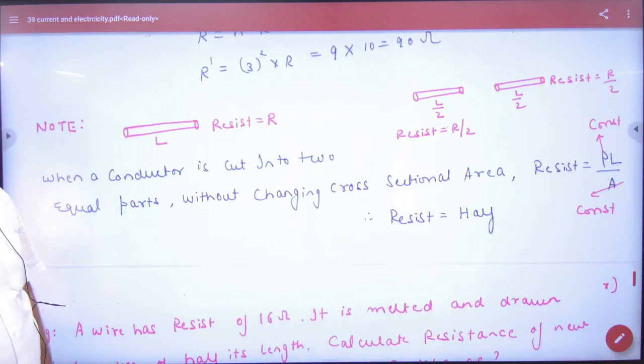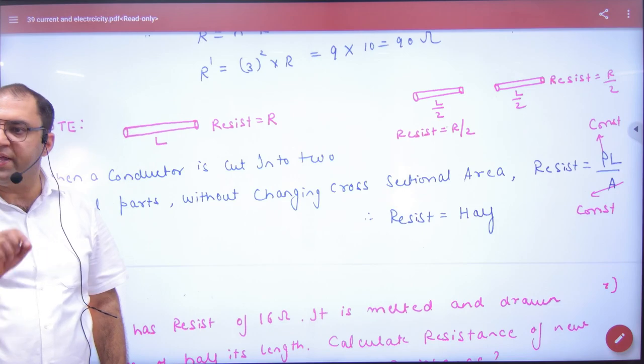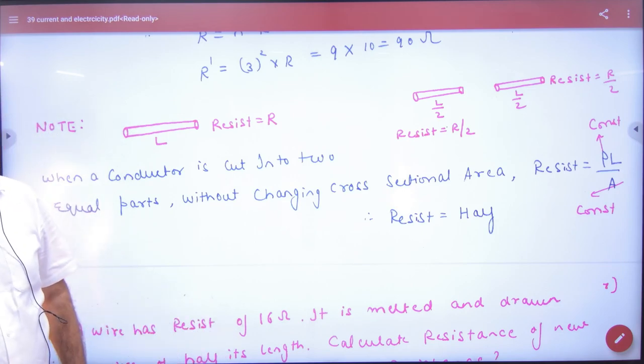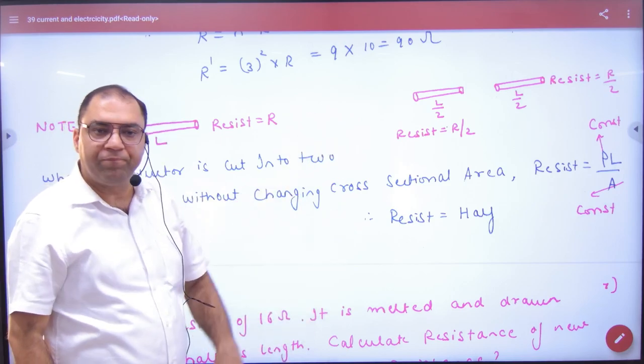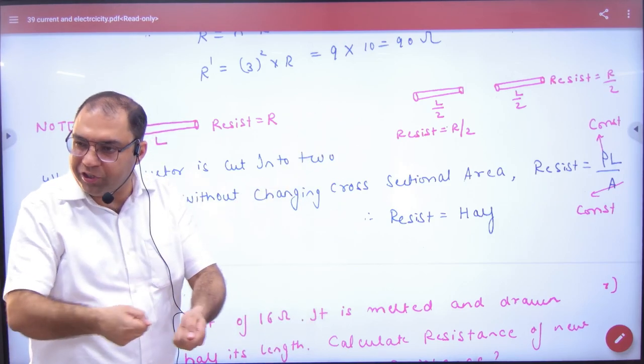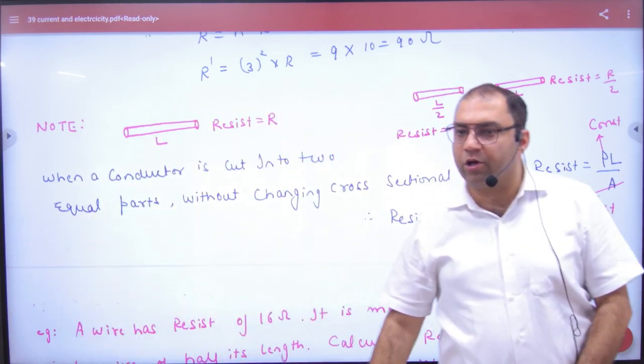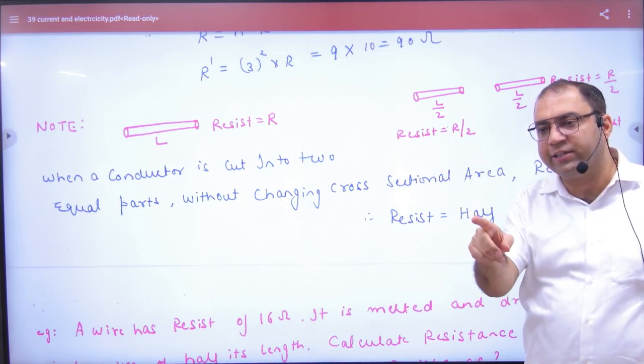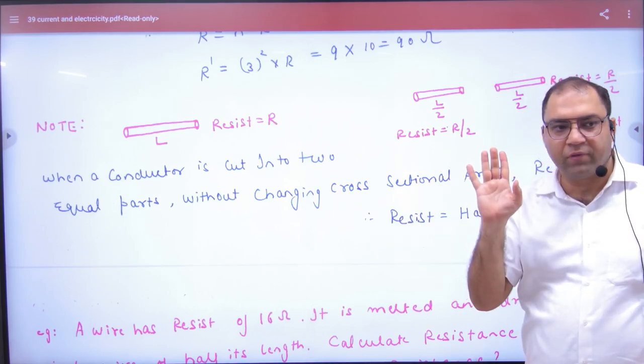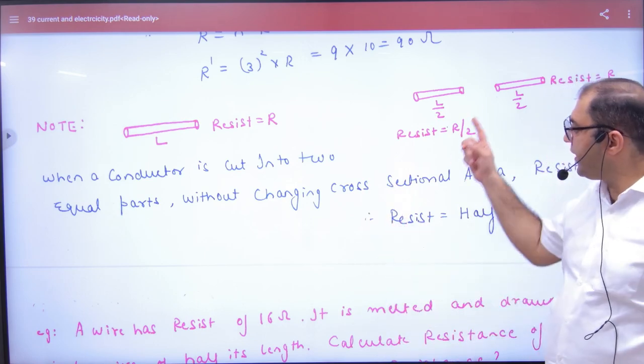The second type of question. If you have a resistance R, which is length L, is a conductor. You have cut it in two parts. Cut it and stretch it. What happens in the area of cross section? There is no change in the area. Resistivity will be the same. The material will not change.